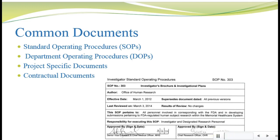So what are some common data management documents? I want to talk about four broad categories. The first is Standard Operating Procedures, or SOPs. We'll discuss SOPs in depth in Module 9, but for this module it'll help you to understand what an SOP is and how it differs from department guidelines or project-specific documents. SOPs are required by ICH E6 Section 5.1.1, which states that the sponsor is responsible for implementing and maintaining quality assurance and quality control systems with written SOPs.